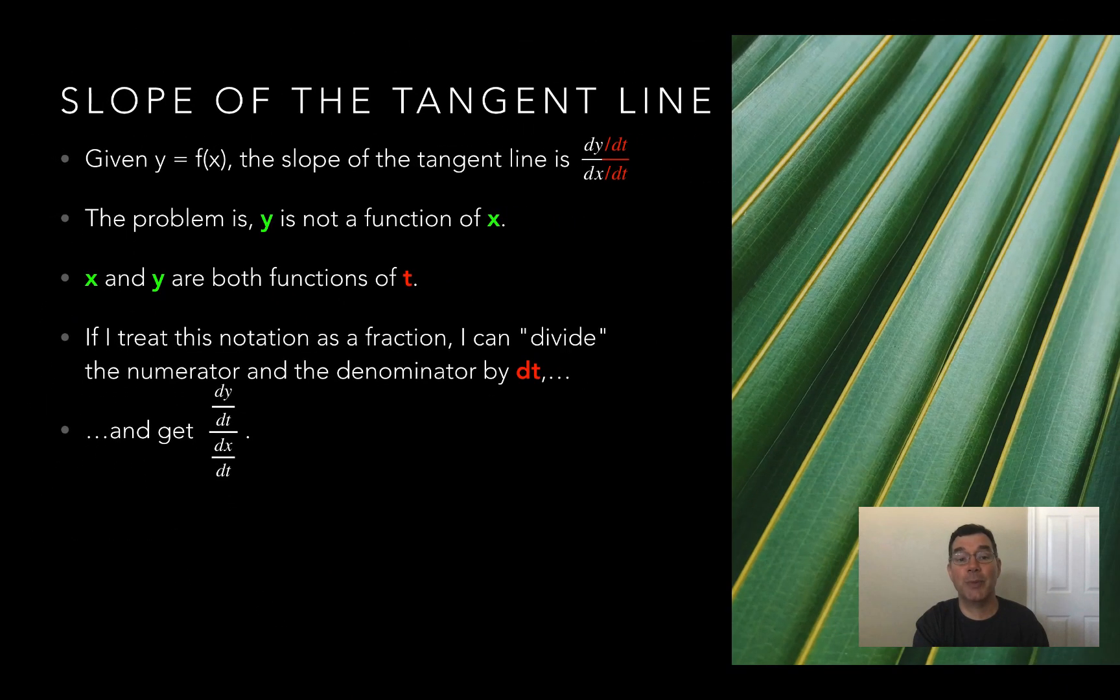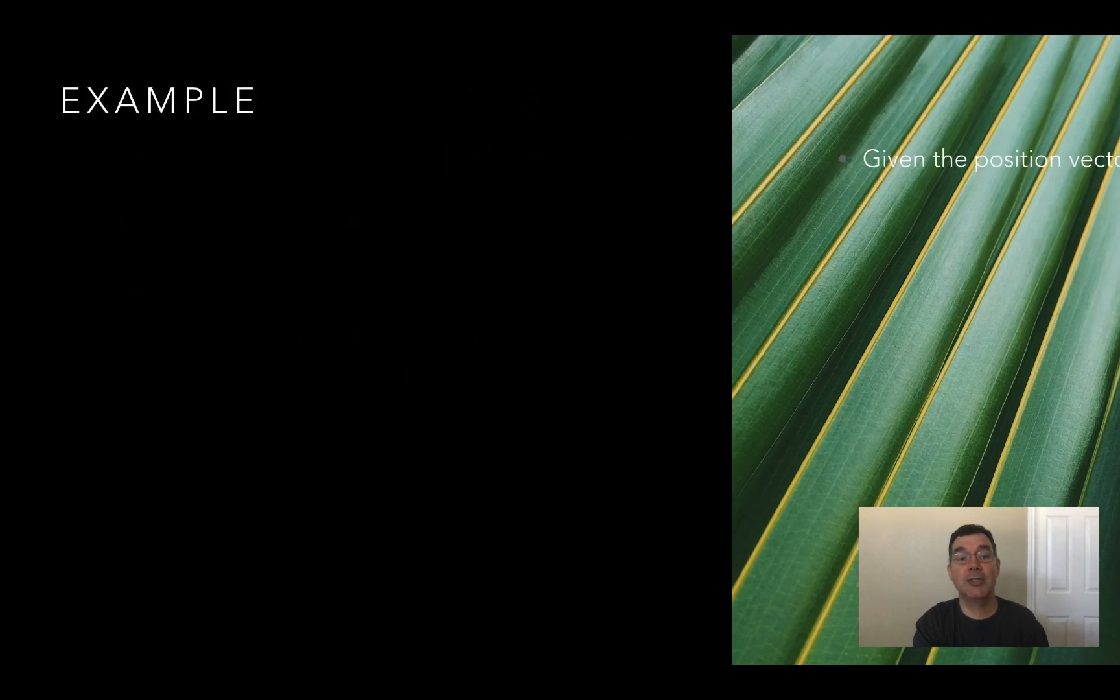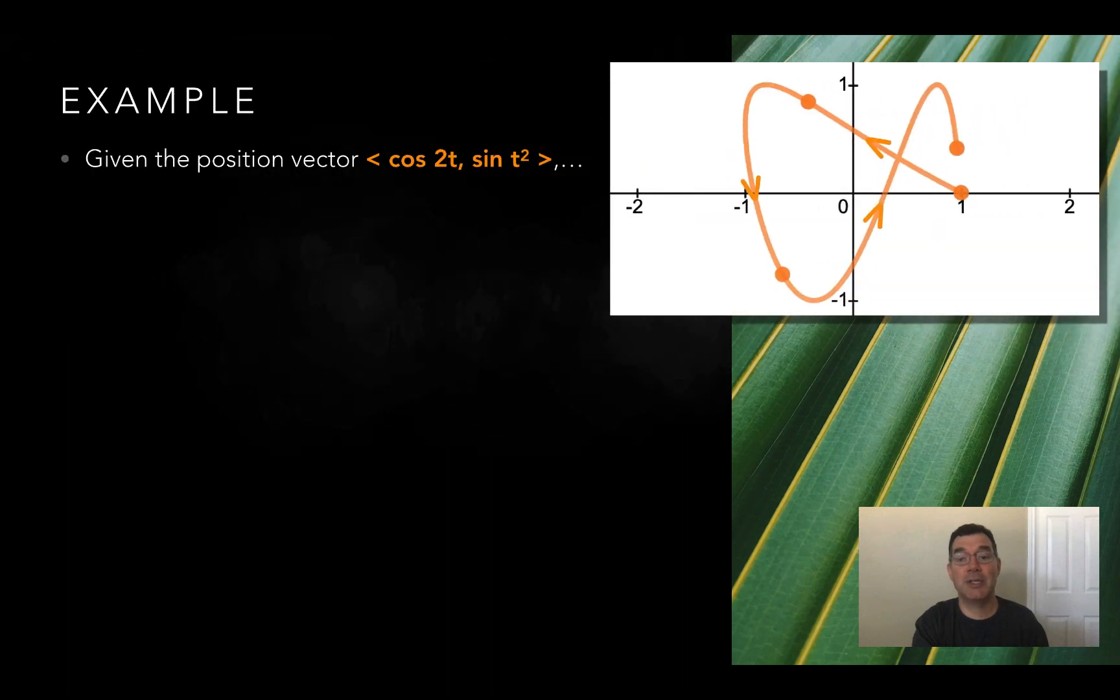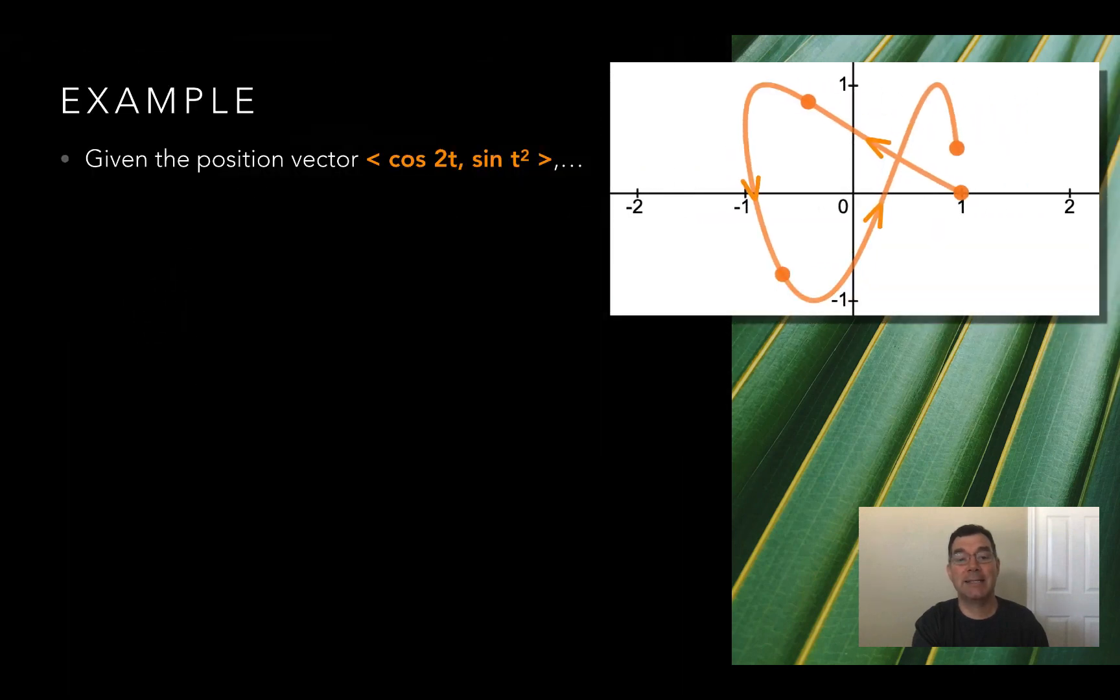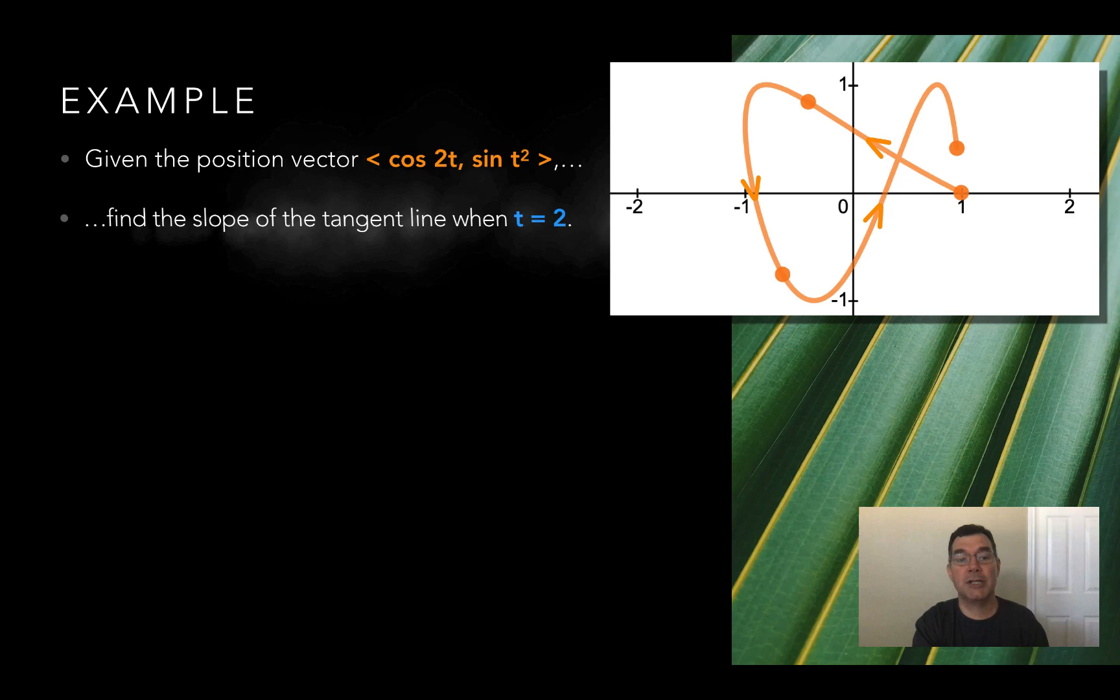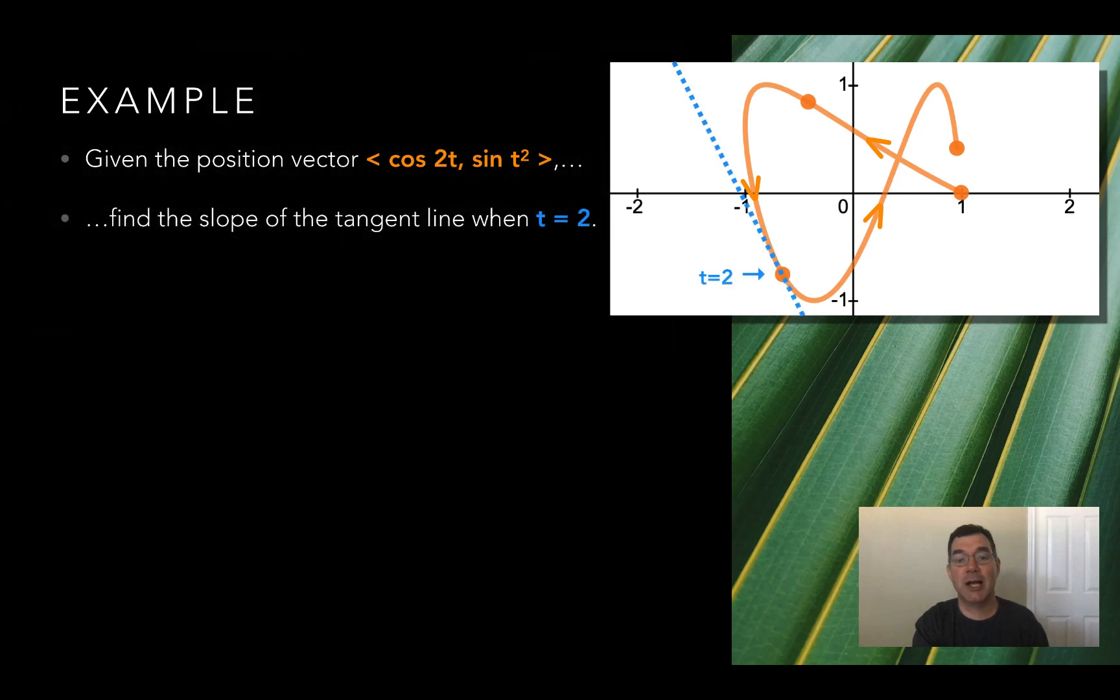So as an example, let's say I have this position vector there, and let's say I want to know the slope of the tangent line when t equals 2, and I've drawn it on there. So I'm just going to figure out dx dt and dy dt separately, plugging in 2 for my t variable. So dx dt is negative 2 sine of 2t, and dy dt is going to be 2t times the cosine of t squared.